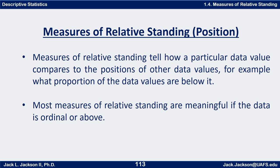In general, measures of relative standing are measures of position — they tell us how a particular data value compares to the positions of other data values. For example, what proportion of the data values are below it. Most measures of relative standing are meaningful if the data is at least ordinal — it has an order to it — or above ordinal: interval or ratio data. It doesn't make sense to talk about relative standing for things that don't have an inherent order, so if it's strictly attribute data at the nominal level, we could not use a measure of relative standing.